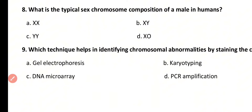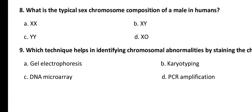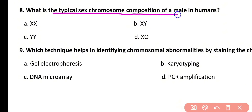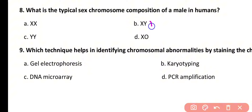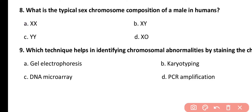Question number 8. What is the typical sex chromosome composition of a male in humans? Options: XX, XY, YY, XO. Correct answer is option B. XY is the typical sex chromosome composition of a human male, whereas XX represents the genotype of a human female.